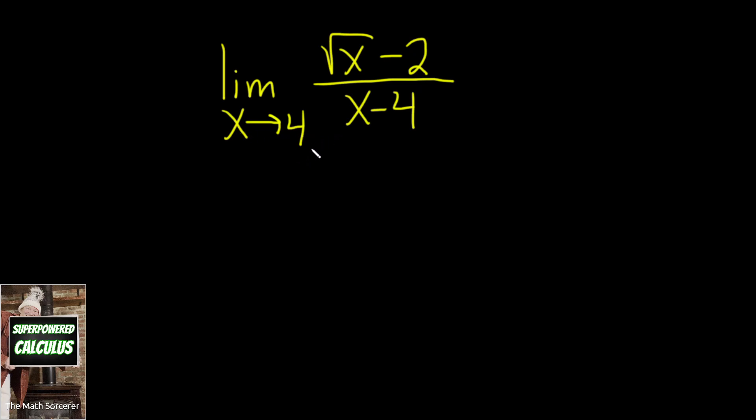When you are trying to evaluate a limit, the first thing you should always try is to take this number and plug it in for the x. However, in this particular case when we do that, we end up with 0 on the bottom because 4 minus 4 is equal to 0, and that is no good because we cannot divide by 0.